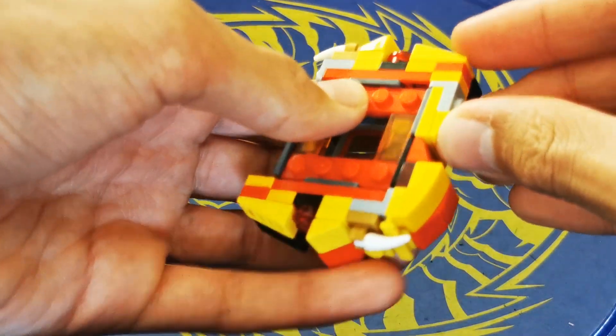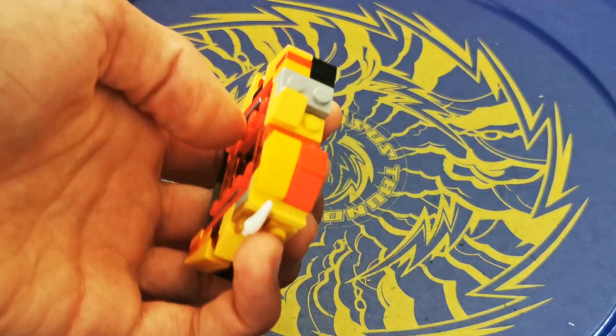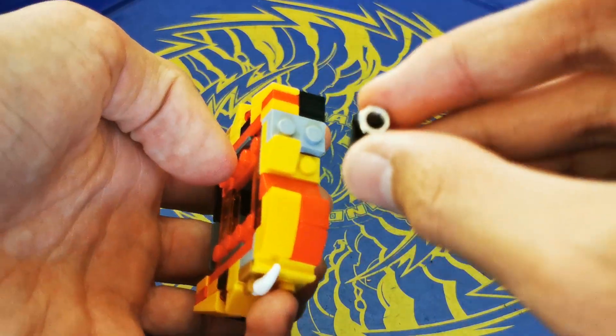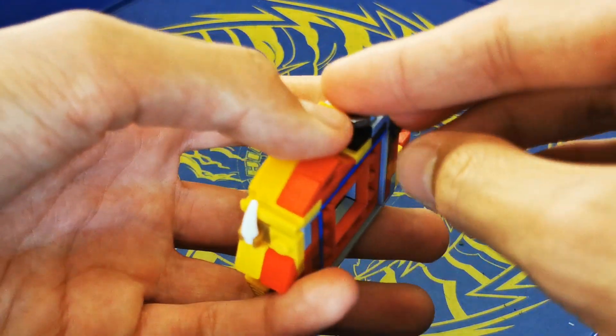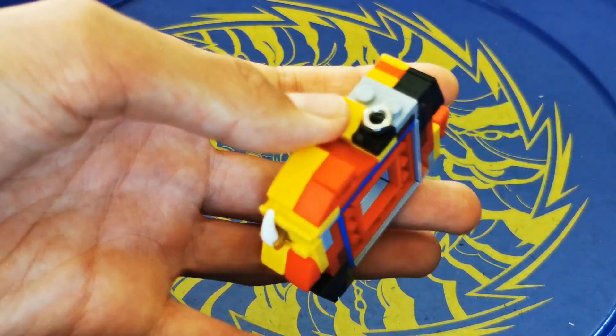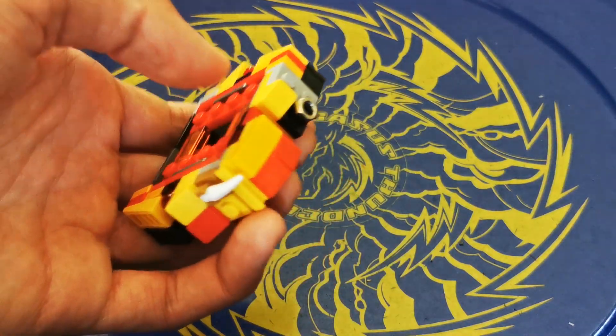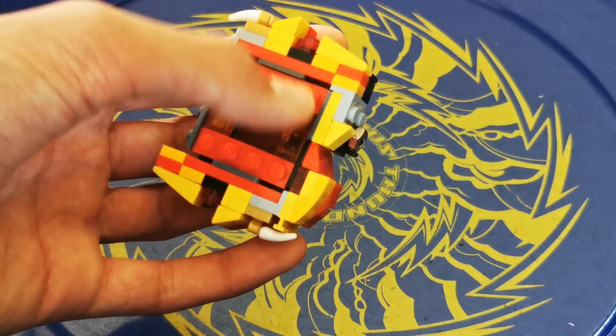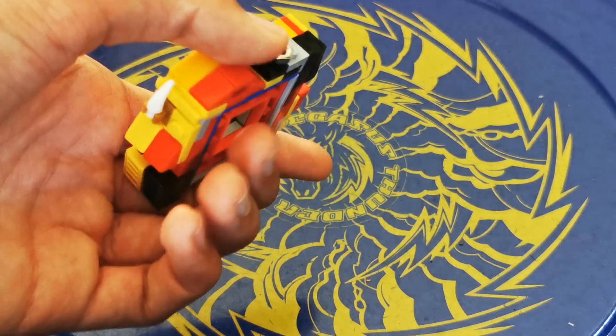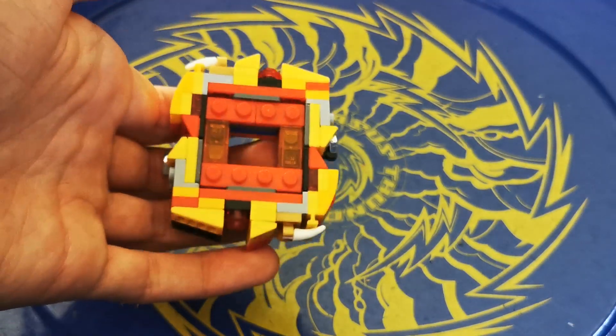So it connects like that to make the bond a bit stronger. Then grab a normal yellow cheese slope and attach it there. And a black clip with a little bolt on the end to give it a bit of metal to make it a bit heavier. Now make another one and put it on the other side.